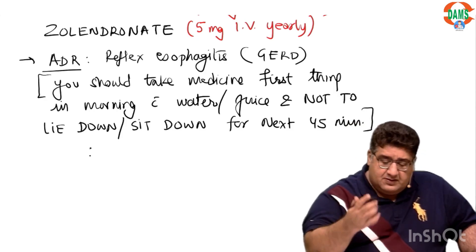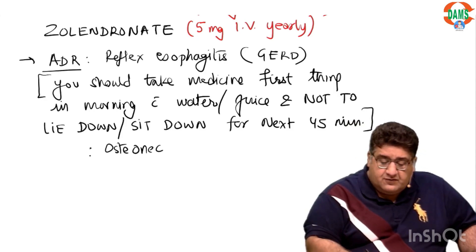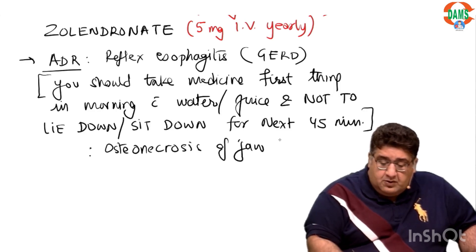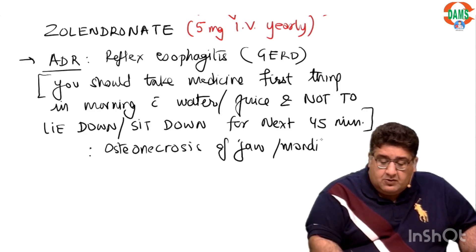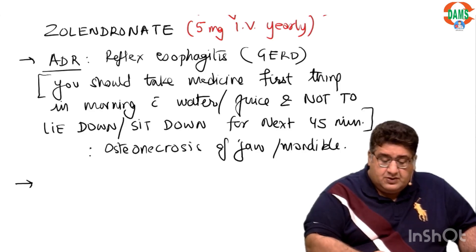The second adverse drug reaction is osteonecrosis of the jaw — osteonecrosis of the mandible — which is known to occur as a complication if bisphosphonates are consumed in excess dose and duration.